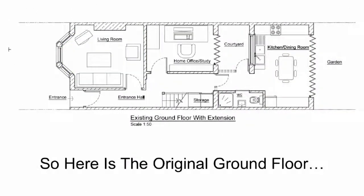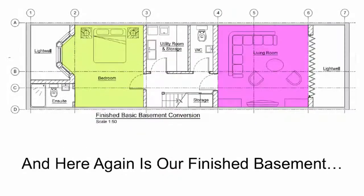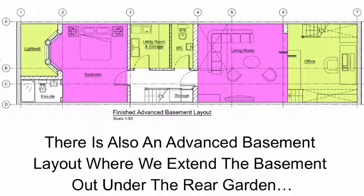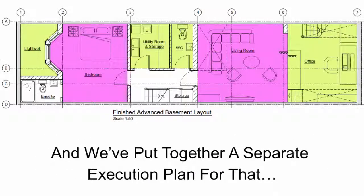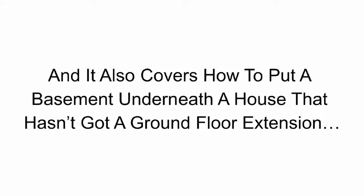Here is the original ground floor and here is what it looks like with a basement underneath — and here again is our finished basement. There is also an advanced basement layout where we extend the basement out underneath the rear garden, and we put together a separate execution plan for that. It covers how to plan out a self-contained flat, which has specific requirements, and also covers how to put a basement underneath a house that hasn't got a ground floor extension.